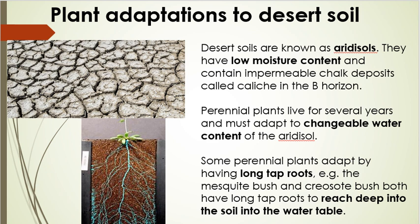Because the soil is impermeable, plants have had to adapt to reach water. Perennial plants — those that live for several years — must adapt to the changeable water content of aridisol soils. Looking at the picture on the bottom left, you can see a perennial plant with a network of very long tap roots. These long tap roots allow the plant to punch through the impermeable chalk deposit and reach right down into the lower horizons and the water table. The mesquite bush and the creosote bush both have these deep tap roots.